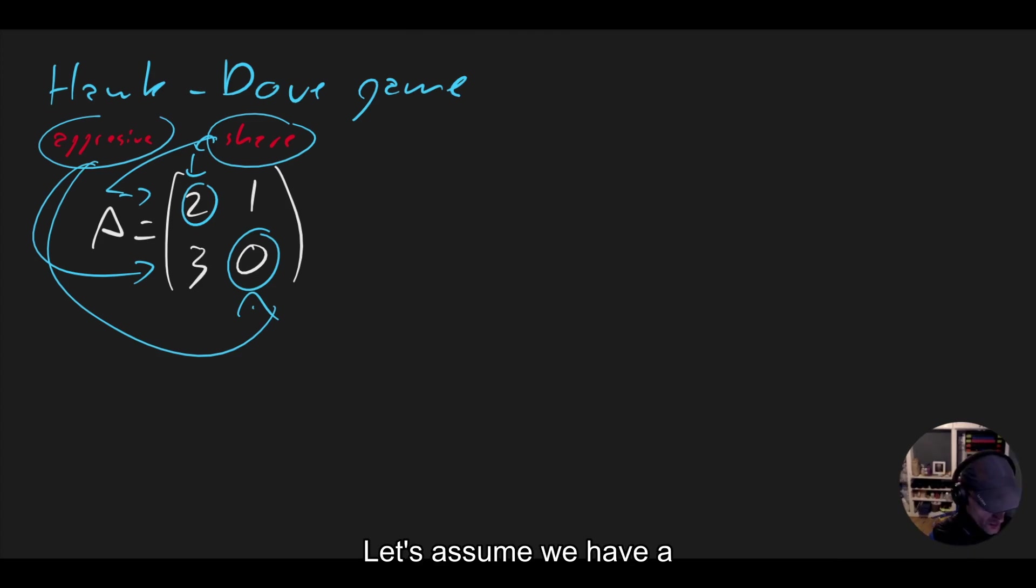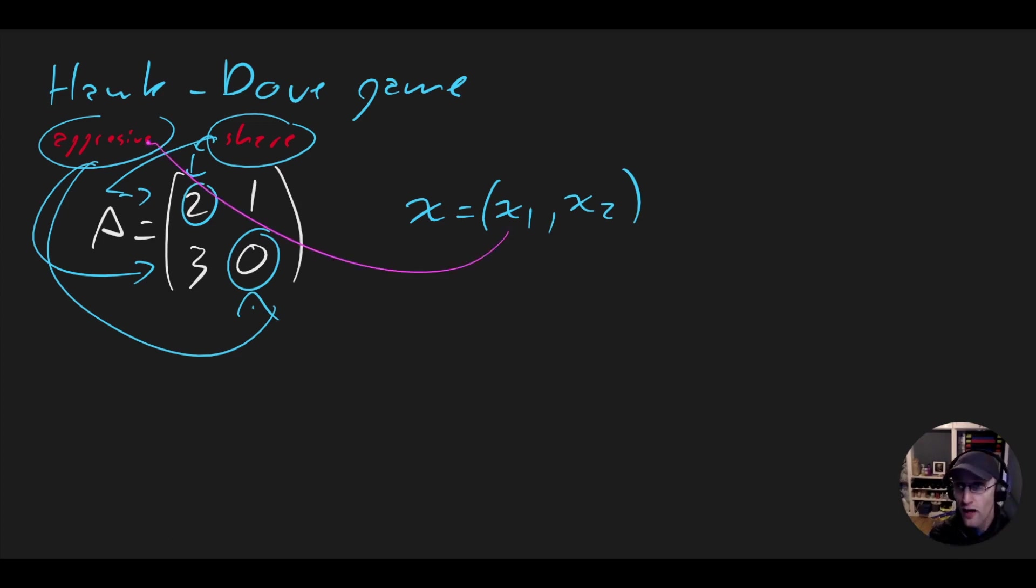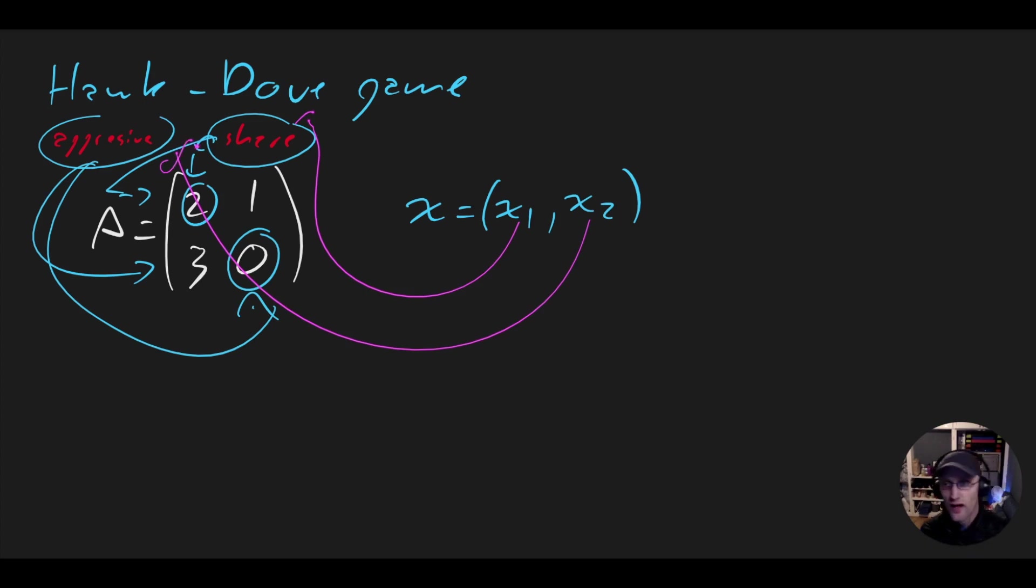And the way we're going to do this is we're going to say, all right, let's assume we have a population x, which is just going to be a vector x1 and x2, where x1 corresponds to the sharers, and x2 corresponds to the aggressive ones.